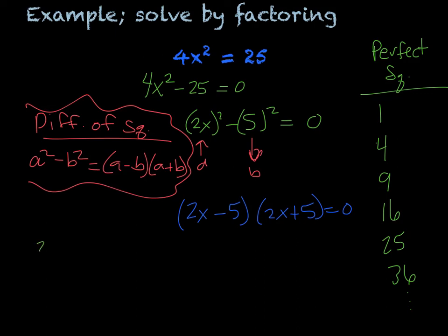So that would be 2x - 5 = 0, or 2x + 5 = 0. So add the 5 over, and 2x = 5, divide by 2, x = 5/2.